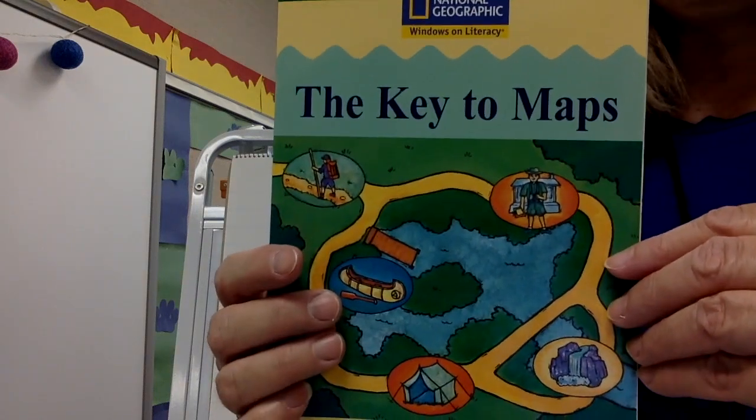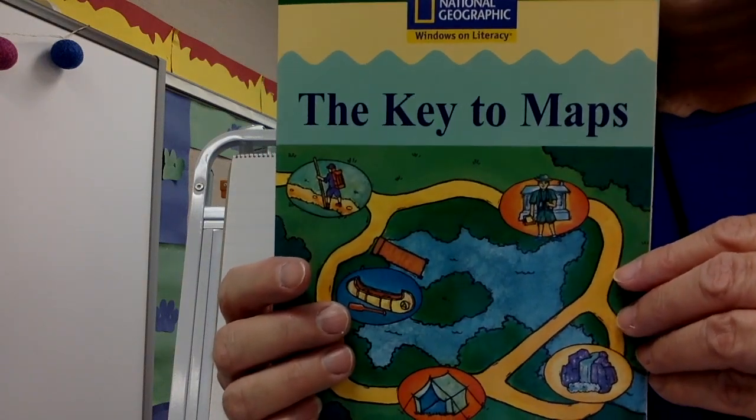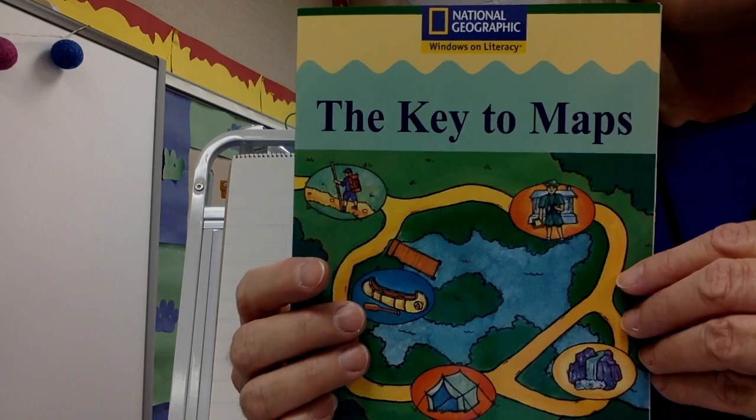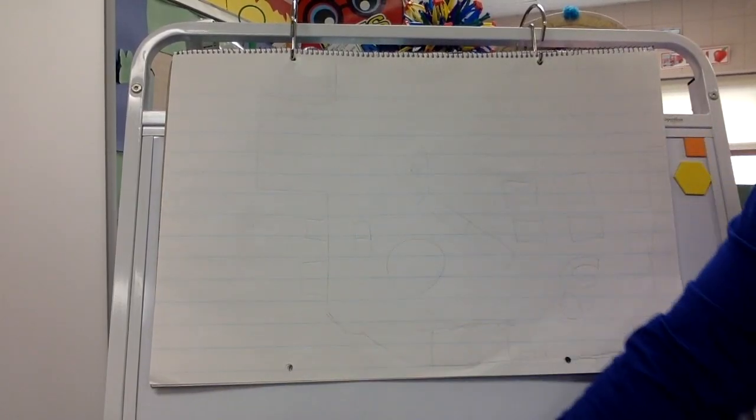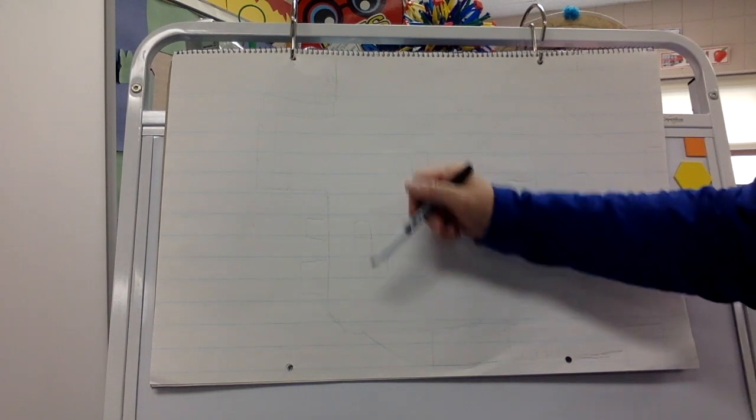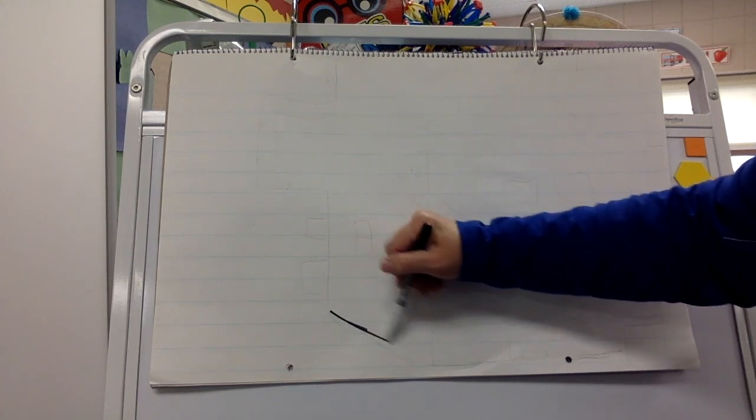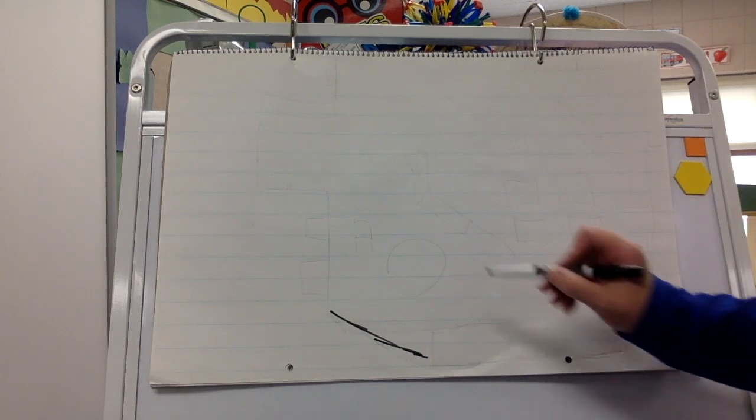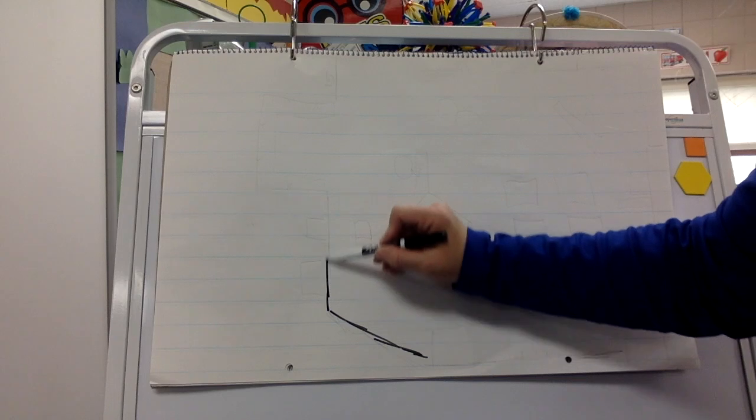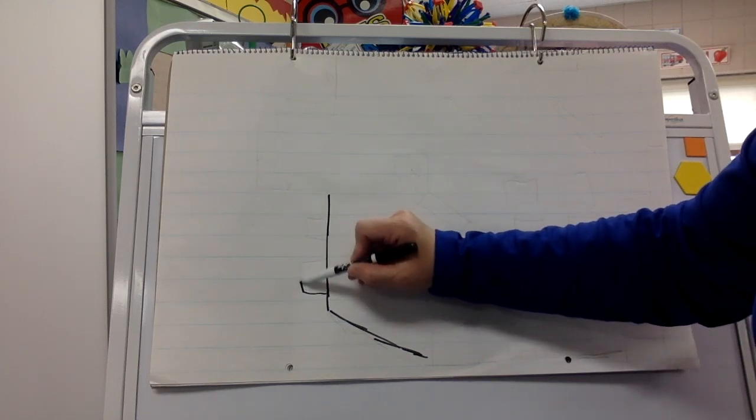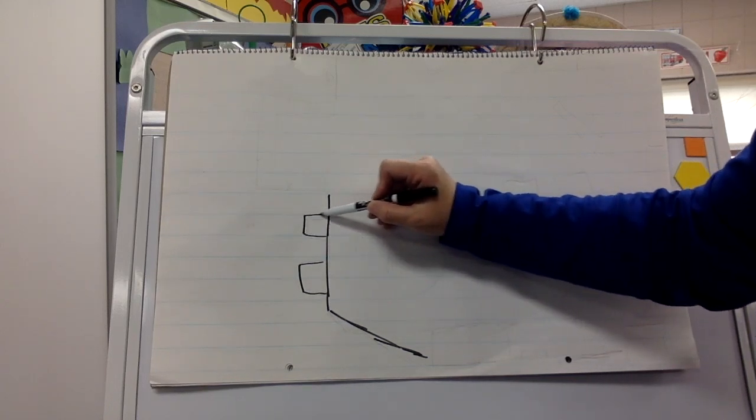I already used a pencil to sketch this, but you can't really see it, so I'm going to do it with the marker. Okay, so you'll take a pencil and sketch it. So I started here with my door. That's where my opening is. And then I came down and I had my two sinks here in my counter.